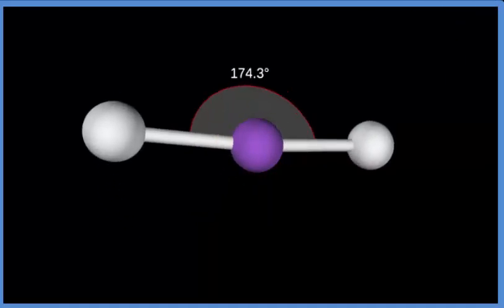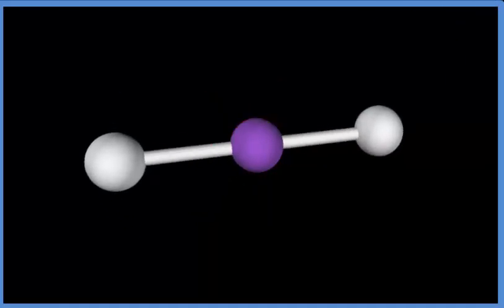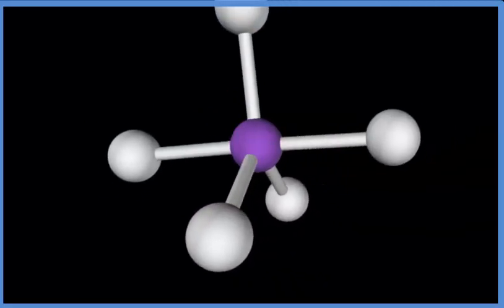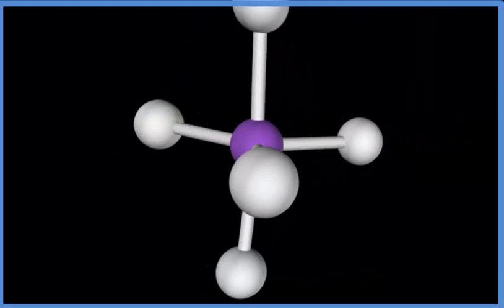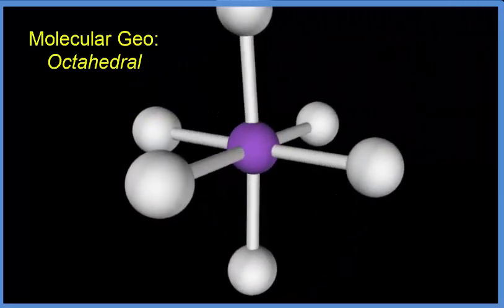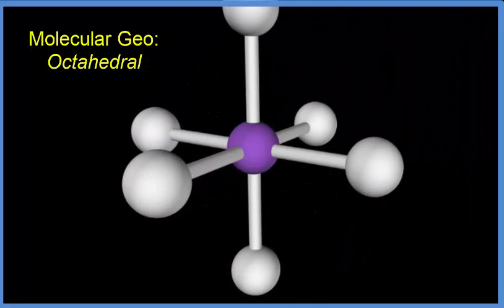Three, still spreading out. Four, five, and finally we add the sixth one and we have what is called an octahedral molecular geometry.